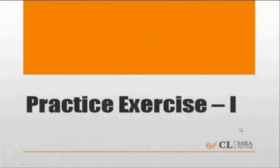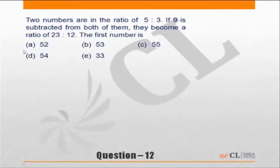Let's move to practice exercise 1, Question 12. Two numbers are in the ratio of 5 is to 3. 9 is subtracted from both of them, they become in the ratio of 23 is to 12. What is the first number?